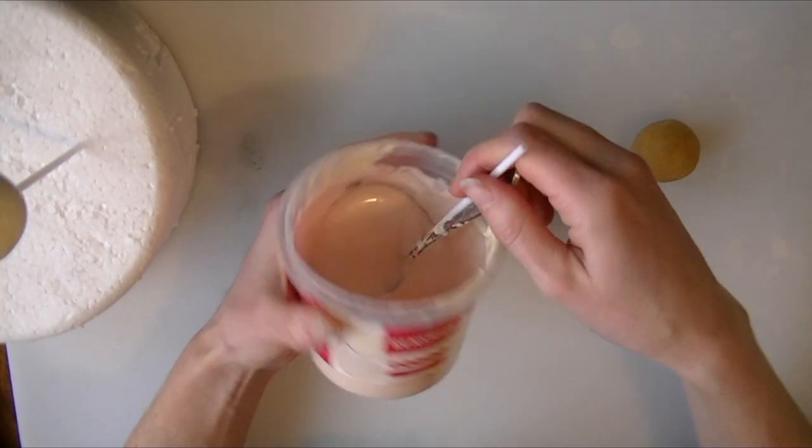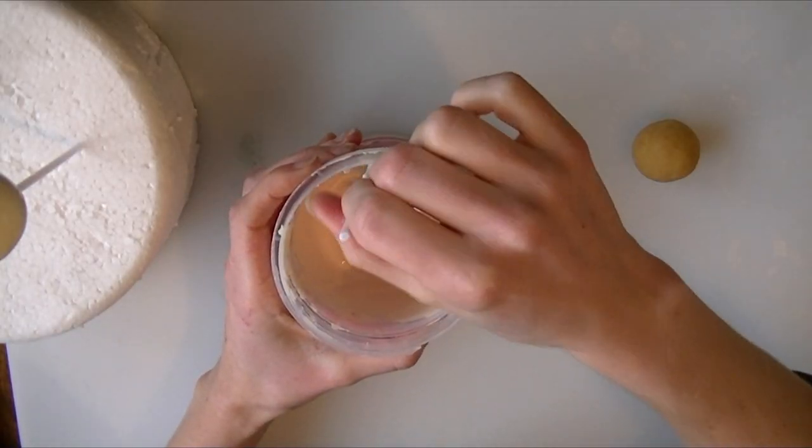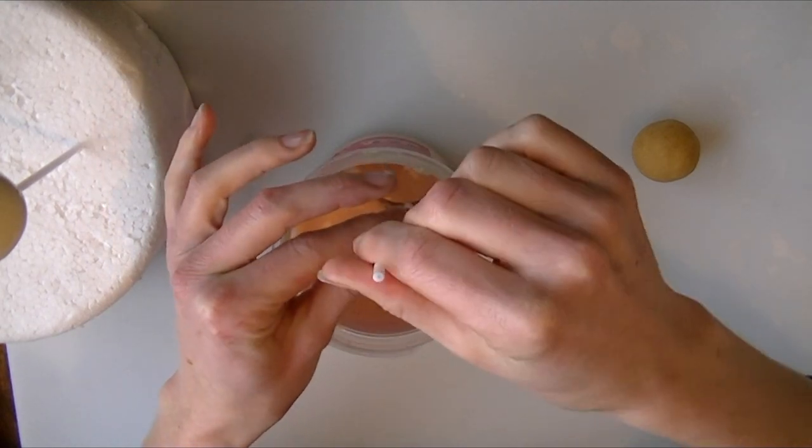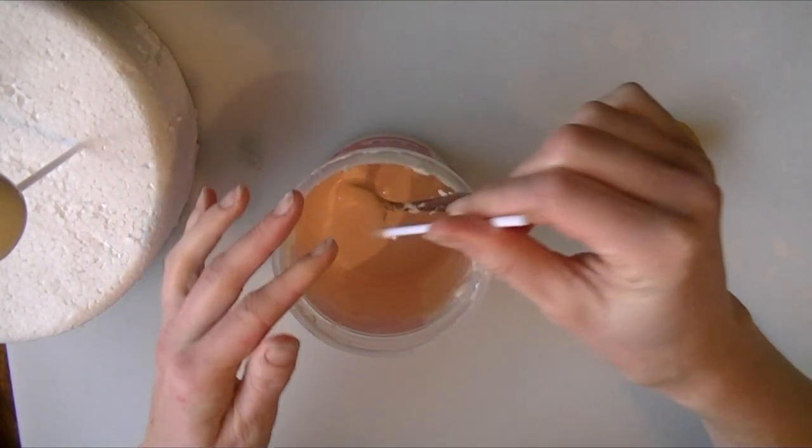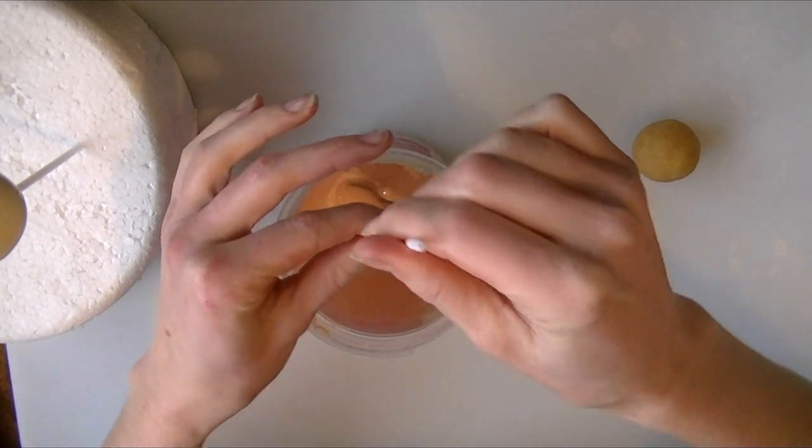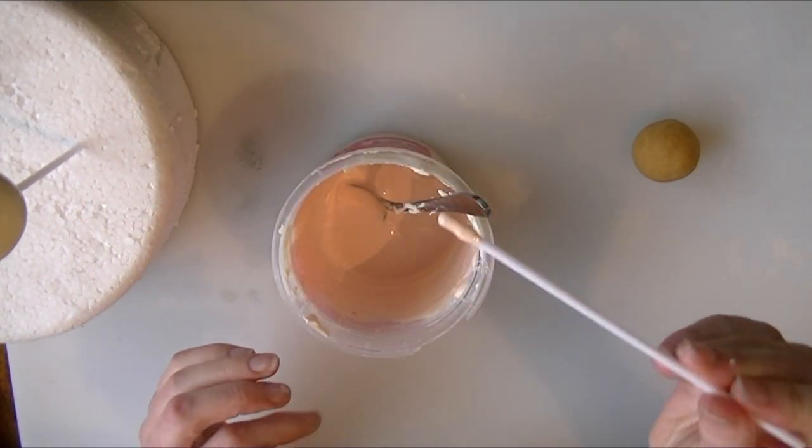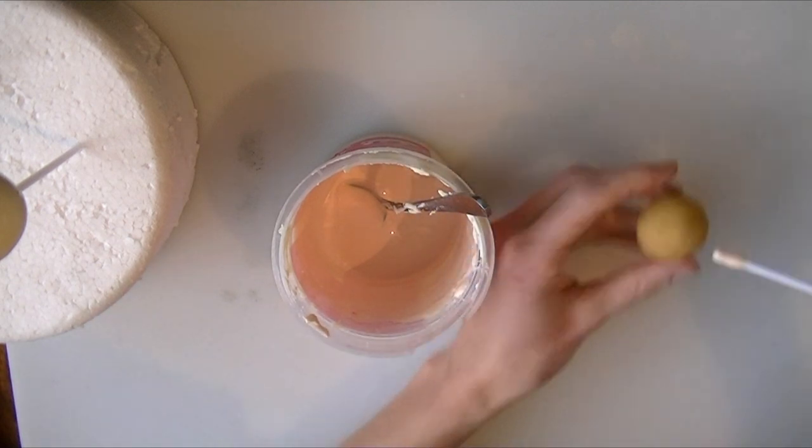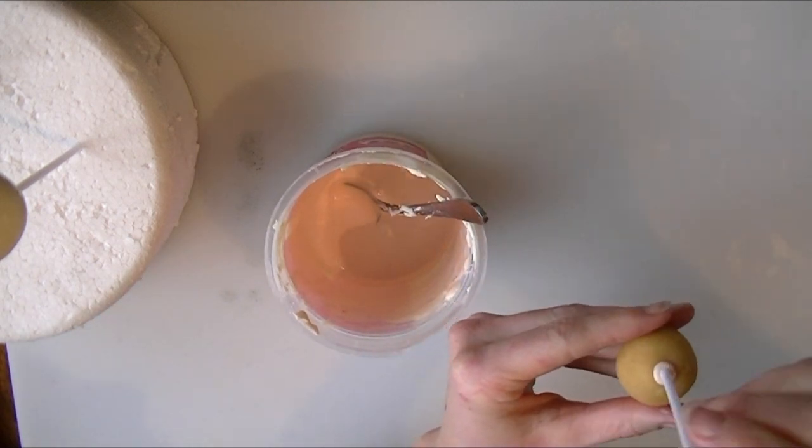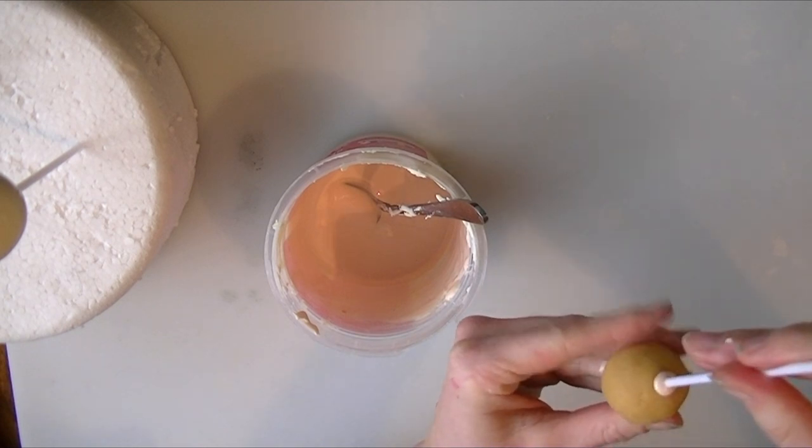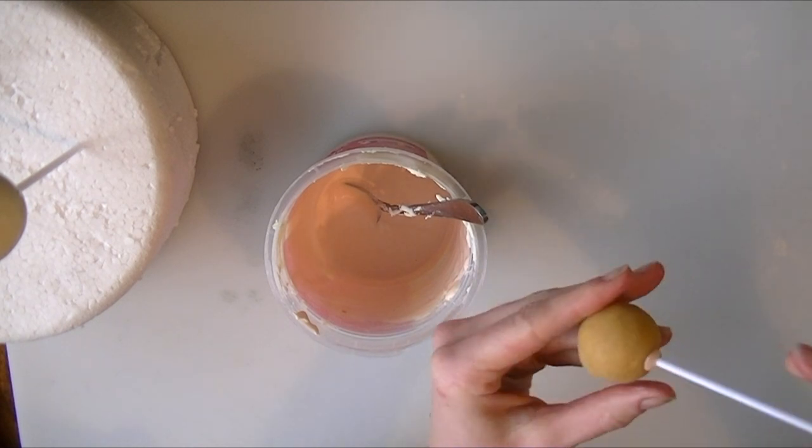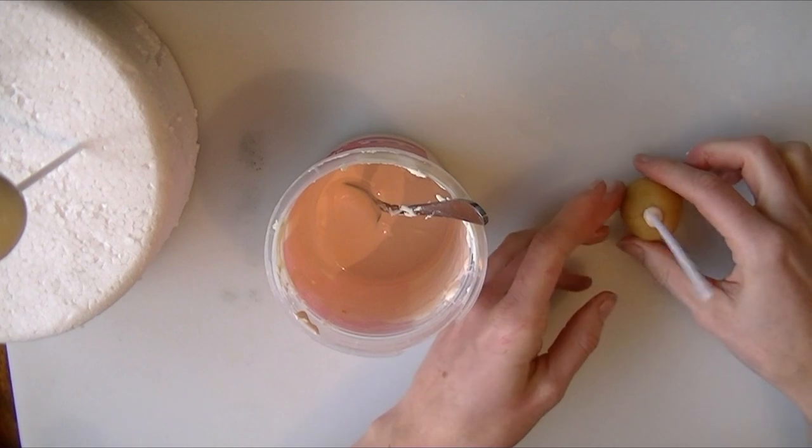So I've melted my colour melts. We want just a small amount of our colour melts on the end of our cake pop stick, and we're just going to push that into our cake pop like so. Don't push it in too far and we're going to let that set.